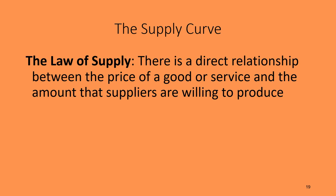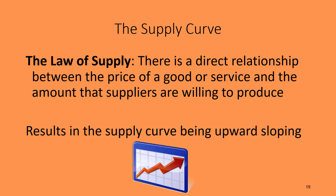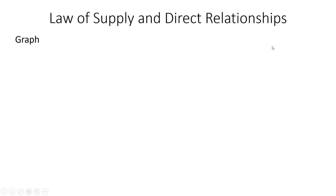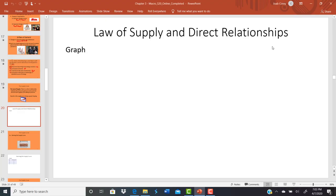The law of supply says there is a direct relationship between the price of a good or service and the amount that suppliers are willing to produce. When we talk about the supply curve, put yourself in the mind of a seller. At higher prices you want to produce and sell more goods because you get a greater reward for doing so. Any positive or direct relationship results in an upward sloping supply curve.